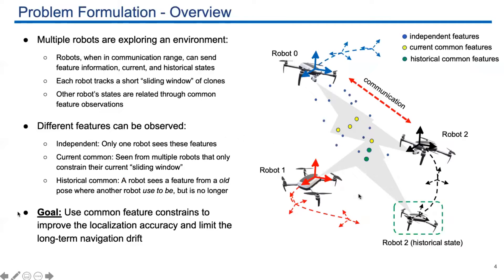As shown in this figure, these two green features can currently be seen by robot one, but cannot be seen by the other two robots at the current sliding window. But these two features were observed by robot two at a previous time at an old state. So this is a historical common feature we leverage to limit the long-term navigation drift. The goal here is to use these common feature constraints to improve the performance.